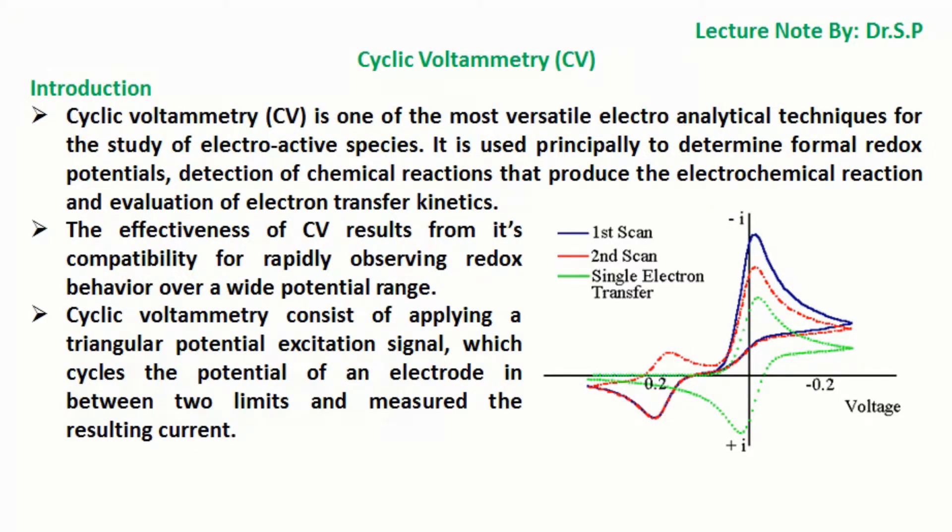Cyclic voltammetry consists of applying a triangular potential excitation signal which cycles the potential of an electrode between two limits and measures the resulting current.